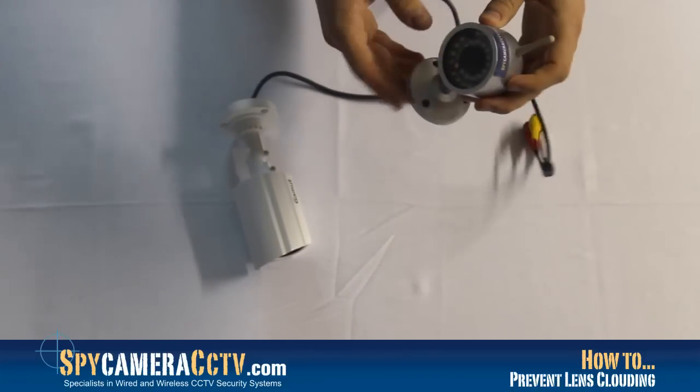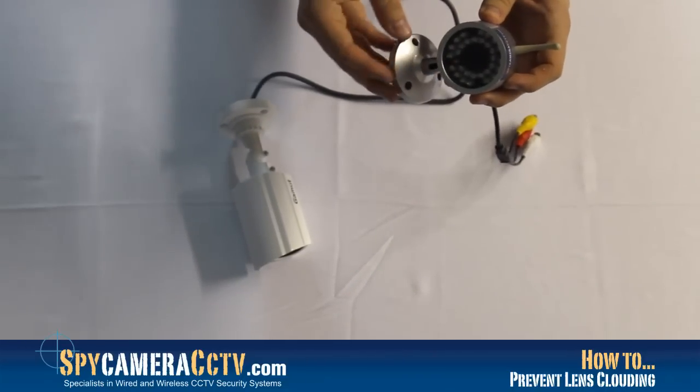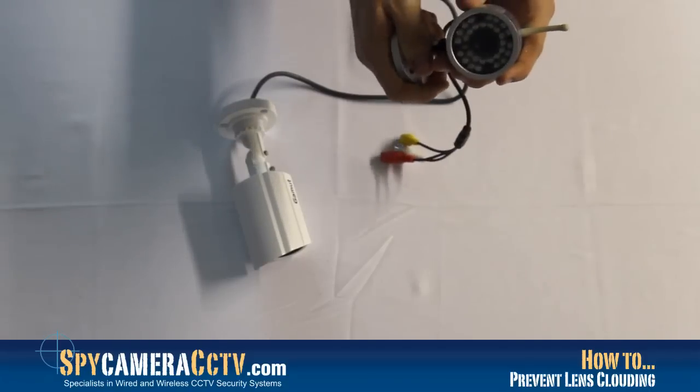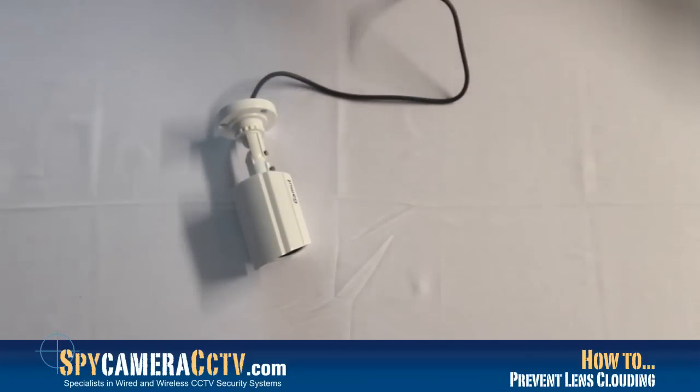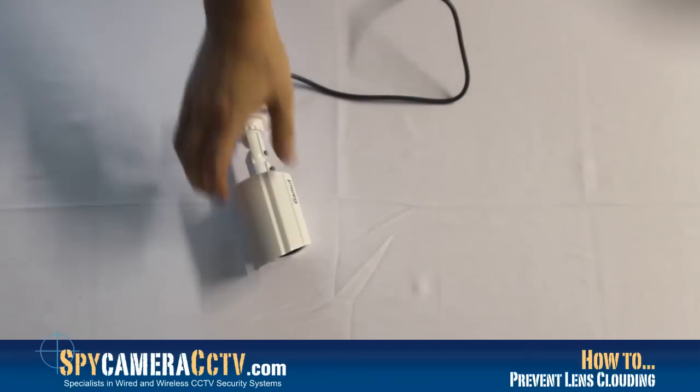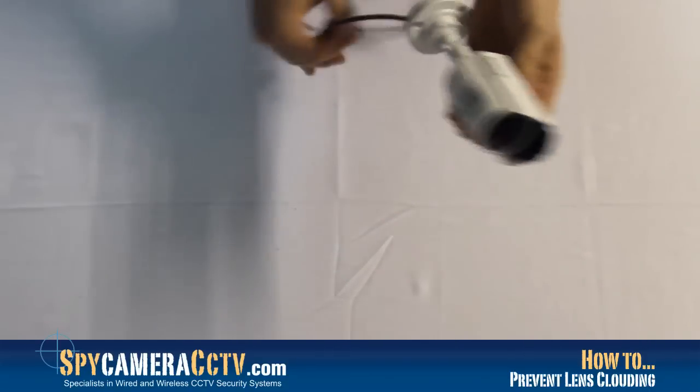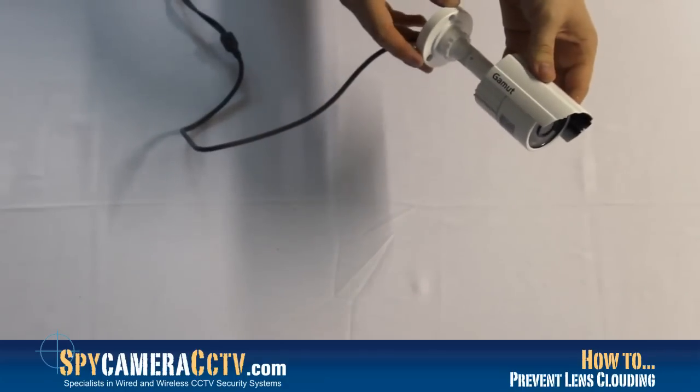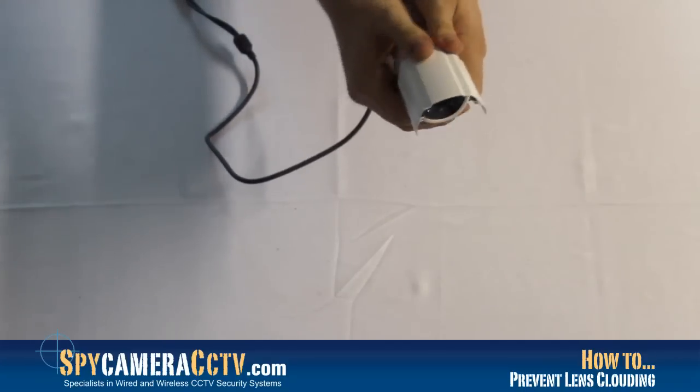And this one here is our IR01 wireless camera, again another camera that we can take these steps with. I'm going to pop this one to the side for the moment and just show you on the slightly clearer 139 camera. What we're going to do is first we'll just slide off the weatherproof cover from this camera.